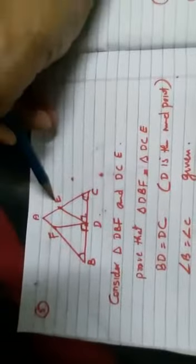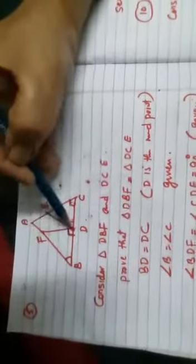And next, fifth question, figure is like this. Consider triangle DBF, that is this one, and DCE, this one. Prove that these two triangles are congruent.